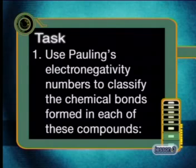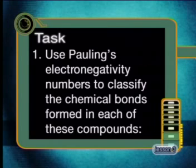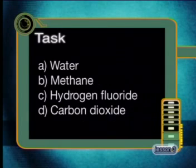Now for today's task: use Pauling's electronegativity numbers to classify the chemical bonds formed in each of these compounds — water, methane, hydrogen fluoride, and carbon dioxide.